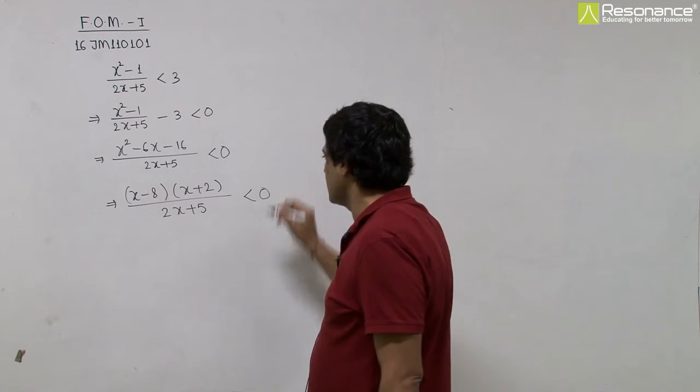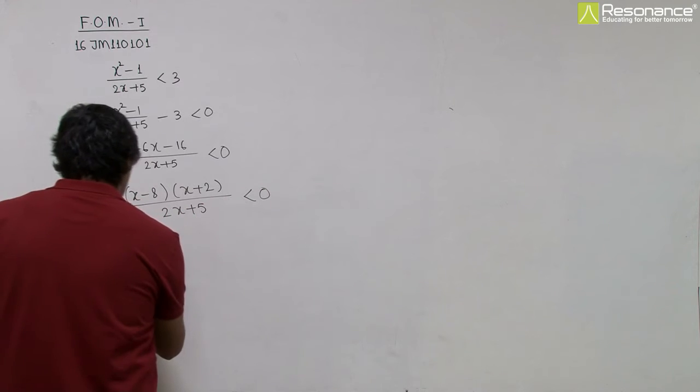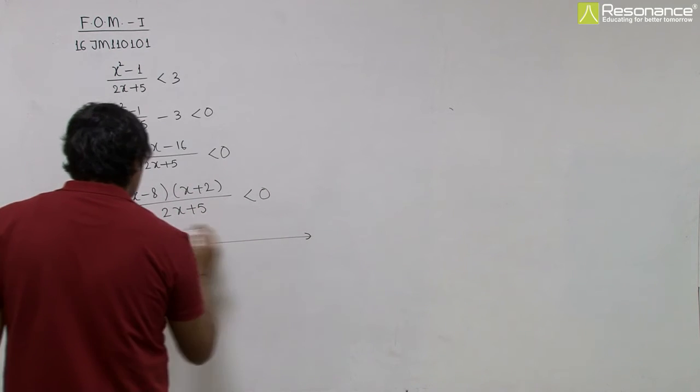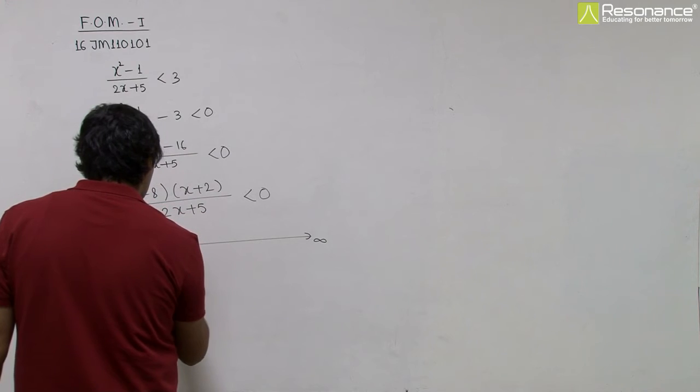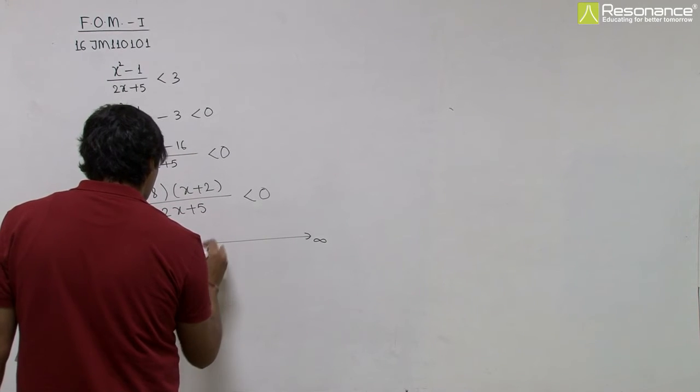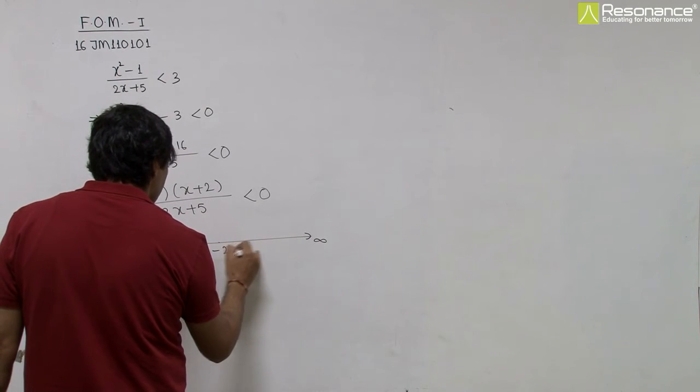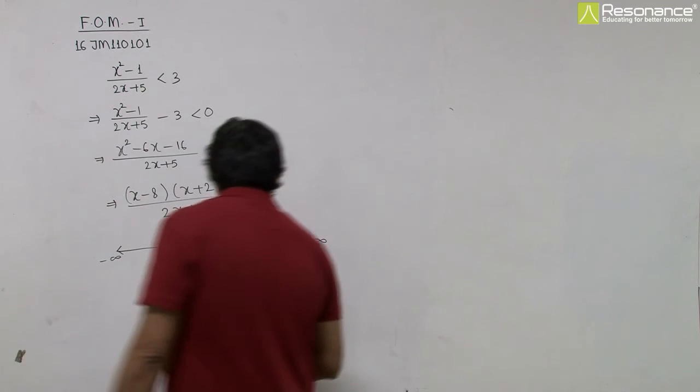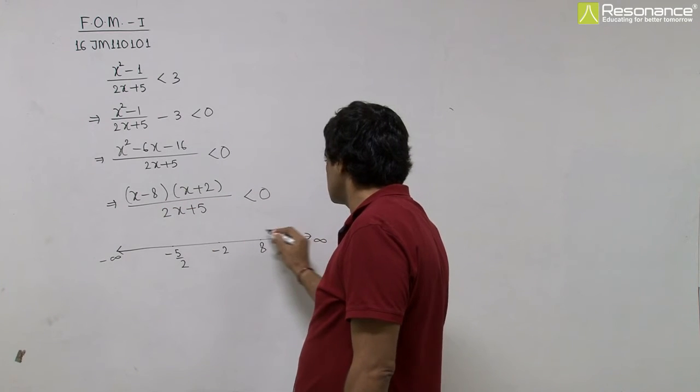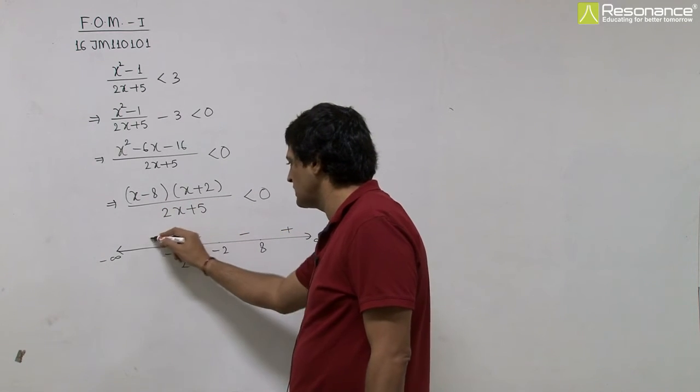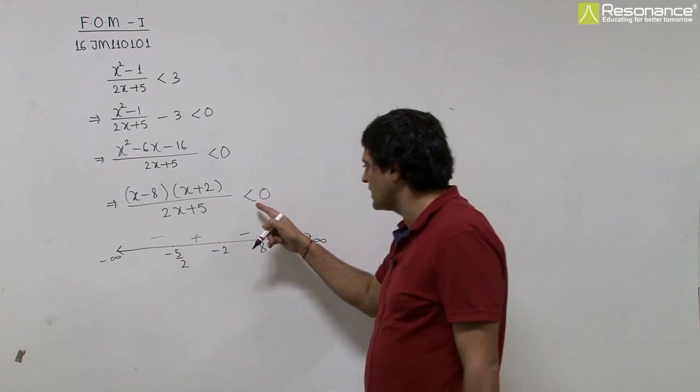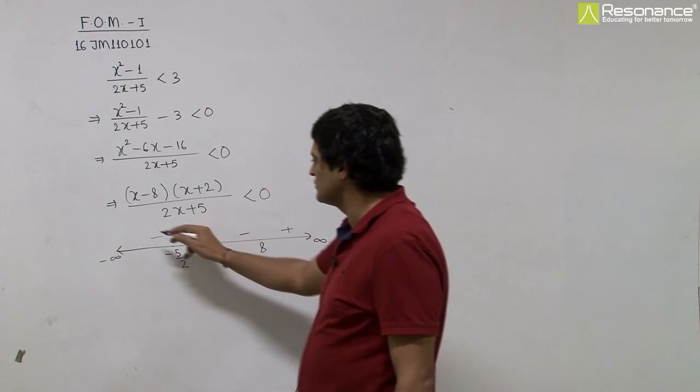Now, using number line, we can write its solution set. The changing points are minus 5 by 2, minus 2 and 8. The signs are plus, minus, plus, minus, and since it is less than 0, so these will be the answer.